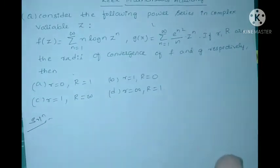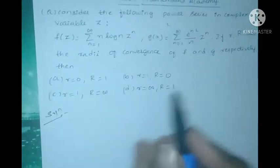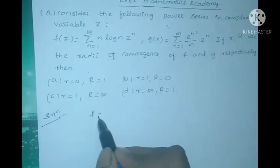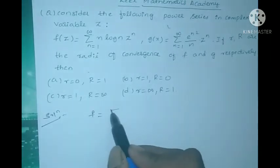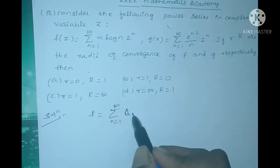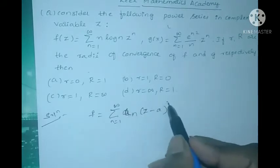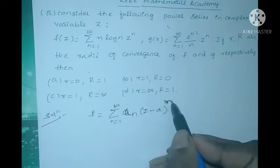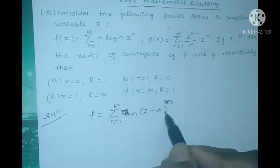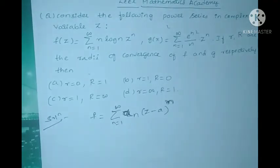Now I will give the definition of Power Series. A Power Series is a series in the form f = summation n=1 to infinity of a_n·(Z − a)^n. Here a_n = (Z − a)^n. This is the general form of a Power Series, centered at Z = a.